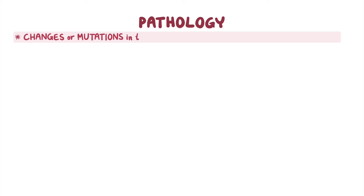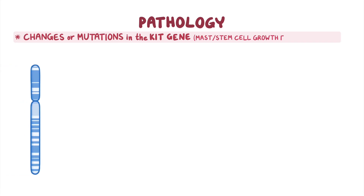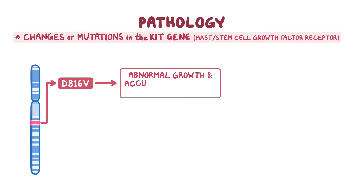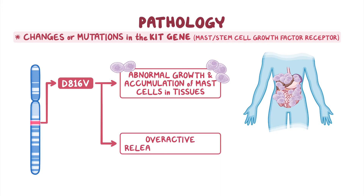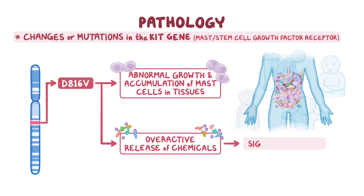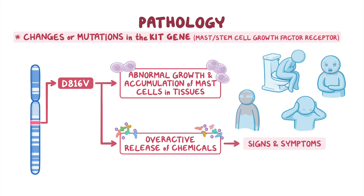Typically, mastocytosis is caused by changes or mutations in the KIT gene, also called mast stem cell growth factor receptor, and the most common mutation is D816V. This leads to abnormal growth and accumulation of mast cells in tissues and overactive release of chemicals, sometimes without a clear trigger. The effects of the chemicals involved in these allergic reactions leads to many of the signs and symptoms of the disorder.